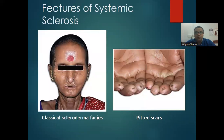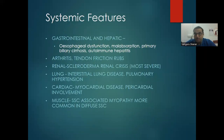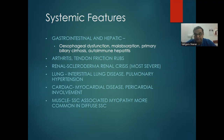This lady demonstrates classical scleroderma — her face is tight, stellate or pitted scars on the finger pads — stellate ulcers due to obliterative vascular pathology. Systemic involvement: GIT shows esophageal dysfunction very commonly, malabsorption, primary biliary cirrhosis, autoimmune hepatitis. Joints: arthritis and tendon friction rubs. Kidney: scleroderma renal crisis leading to mortality. Lungs: interstitial lung disease and pulmonary hypertension. Cardiac: myocardial disease and pericardial involvement. Muscles: scleroderma-associated myopathy, more common in diffuse types.